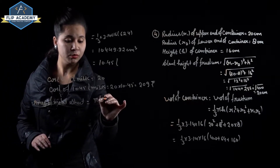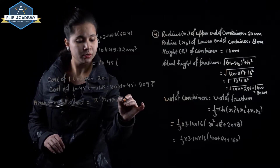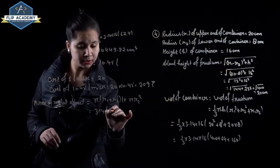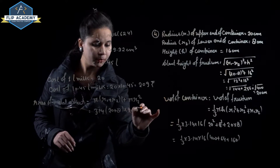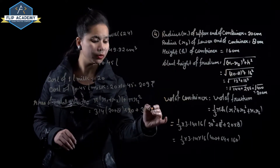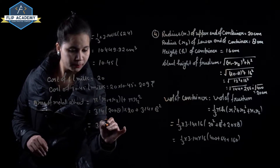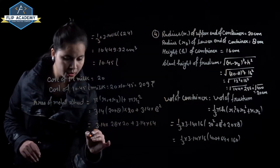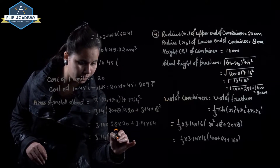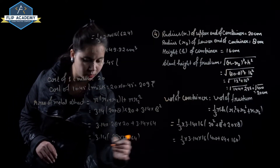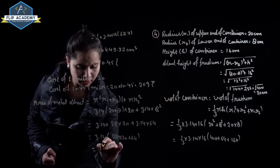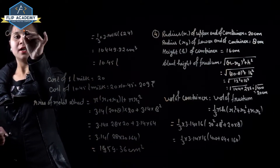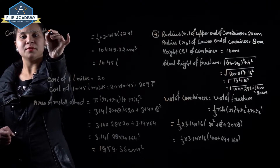Area of metal sheet to make the container equals pi into r1 plus r2 into l, plus pi r2 square. With pi equal to 3.14, r1 plus r2 means 20 plus 8, slant height equal to 20, and r2 square equal to 8 square: 3.14 into 28 into 20 plus 3.14 into 64. Taking 3.14 as common gives 3.14 into 28 into 20 plus 64, which simplifies to 1,959.36 centimeter square.